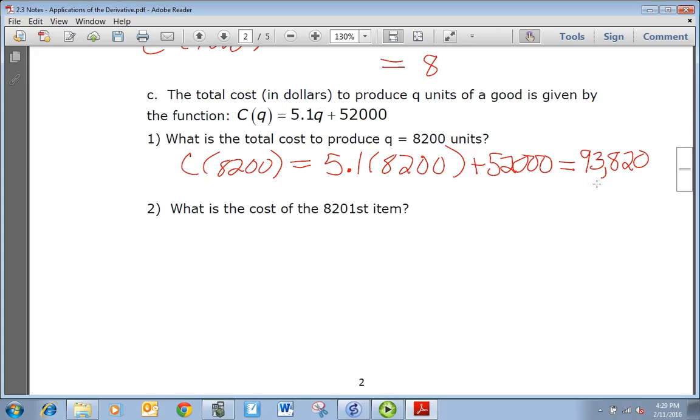What is the cost to produce the 8201st item? So in other words, the next, that screams marginal cost. So to get marginal cost we need the derivative of the cost function, which is just 5.1. So it's a constant function, so no matter what we plug in, we're going to get 5.1. So the answer for this is just 5.1.